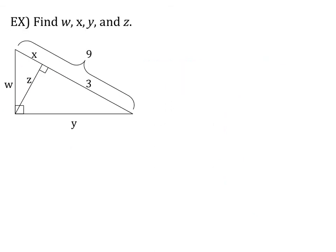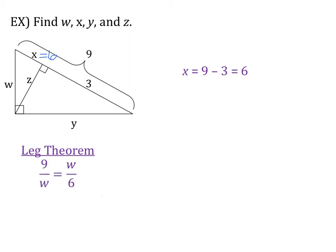Now let's look at this problem. We have W, X, Y, and Z to find. The first thing to notice is that X is easy since the whole hypotenuse is 9 and one segment is 3, so X must be 6. Now that we know the whole hypotenuse, we can find the legs using the leg theorem: whole hypotenuse over leg equals leg over adjacent piece of hypotenuse. Starting with W: 9 over W equals W over 6, so W squared equals 54, meaning W equals the square root of 54, which simplifies to 3 root 6.